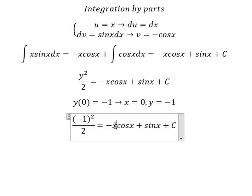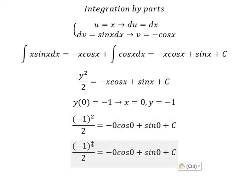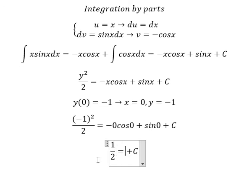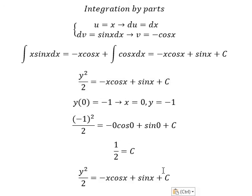We put zero in here for s, and zero again in this term. So this term gives one over two, and these terms give zero. Therefore, C equals one over two, and we can substitute one over two back into the equation.